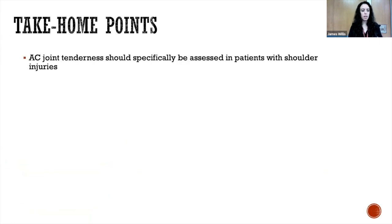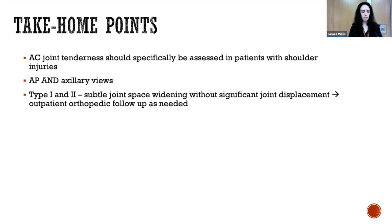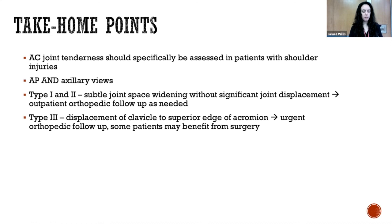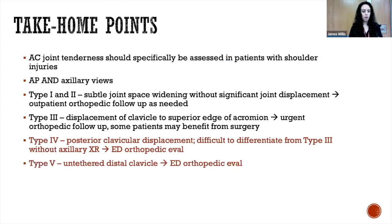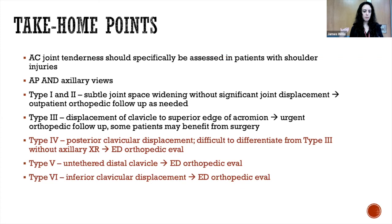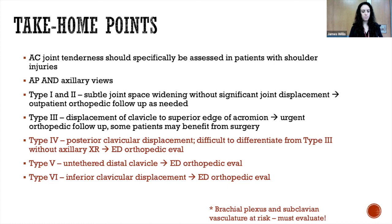Take home points: AC joint tenderness should be specifically assessed on exam — not just range of motion or general tenderness, but specifically palpating the AC joint and possibly performing the AC joint compression test. Get AP and axillary views if you have high clinical suspicion. Types one and two show subtle joint space widening without significant displacement and can have outpatient orthopedic follow-up. Type three, with clavicular displacement to the superior edge of the acromion, needs orthopedic follow-up within one week. Types four through six — posterior, untethered superior, and inferior displacement respectively — require emergency department orthopedic evaluation and assessment for brachial plexus or subclavian vascular disruption.